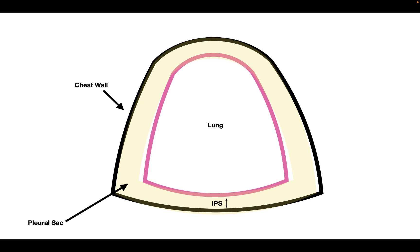Let's say that outside the person, we have a barometric pressure of zero centimeters of water. Inside the intrapleural space, we have intrapleural pressures: negative 10 at the top of the lungs, negative 5 in the middle, and negative 2.5 at the bottom. This is because the person is standing, so the lungs are being pulled down by gravity. Therefore, the pressure at the bottom is greater than the pressure at the top.